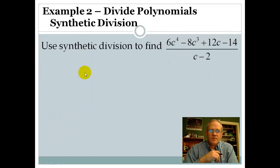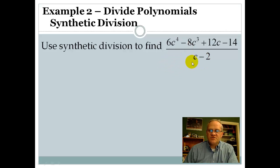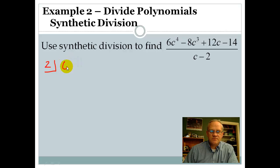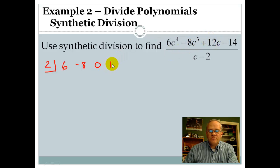All right, let's move on to example 2. Here's another way you can see the same type of problem — the numerator divided by the denominator. We go through the same procedure. Since it's c minus 2, we put a positive 2 in the box. Then we line up our numbers: we've got 6 for the leading coefficient. Then for c to the third, that's negative 8. But wait — we don't have a c squared term, so we need to put a 0 in here. Then for the c terms, we put 12, and then negative 14. Be really careful that all terms are present; if one is missing, put a 0.